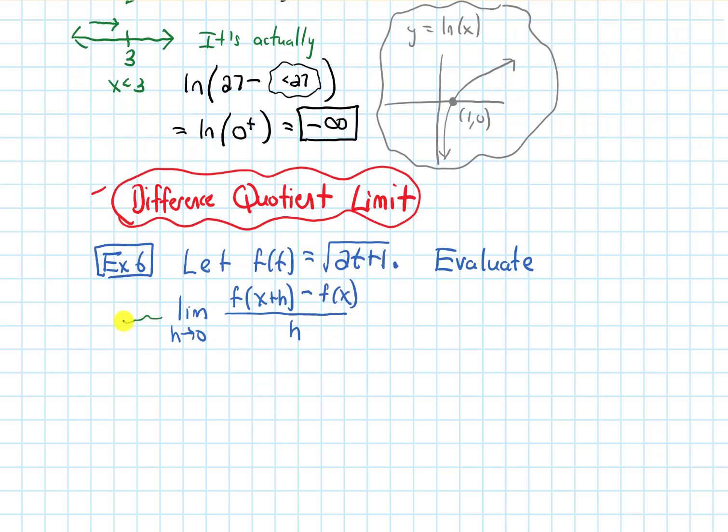So the first thing that I might think of is, I see a limit. Let's try plugging in. If I plug in 0, I'll get f of x minus f of x over 0, because I plug in 0 for the h. And that'll give me 0 over 0. And that's an indeterminate form, so I need to simplify.